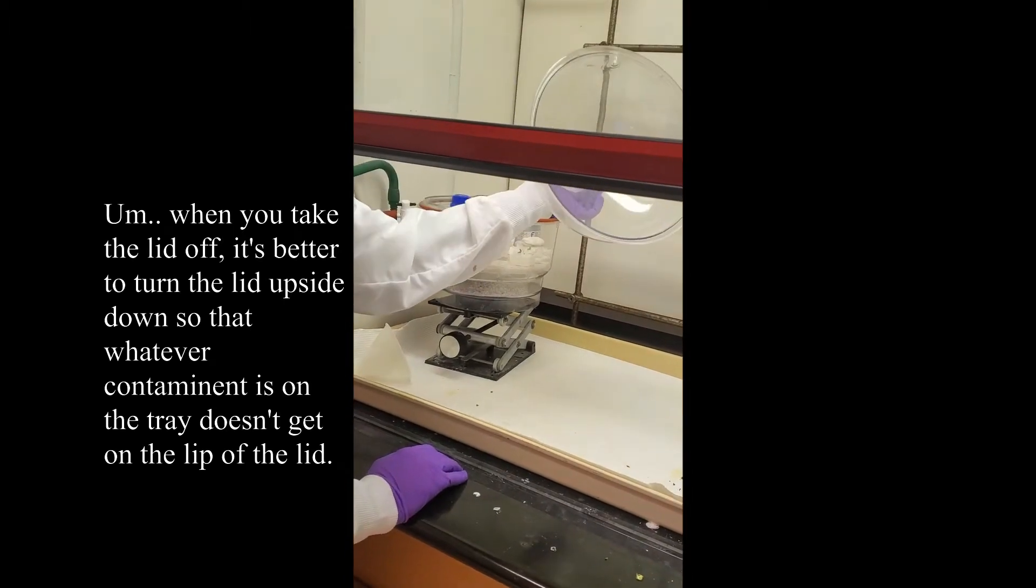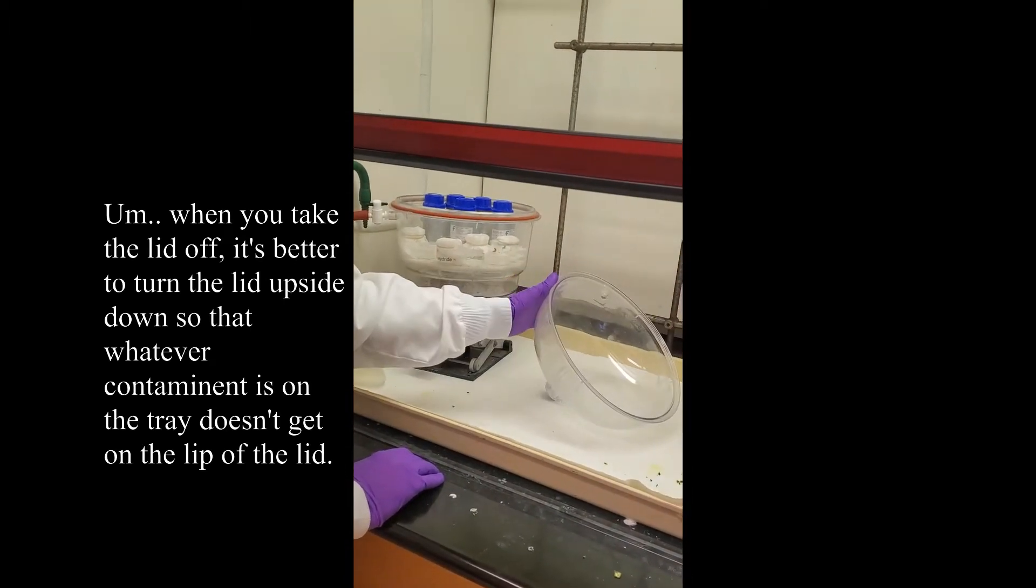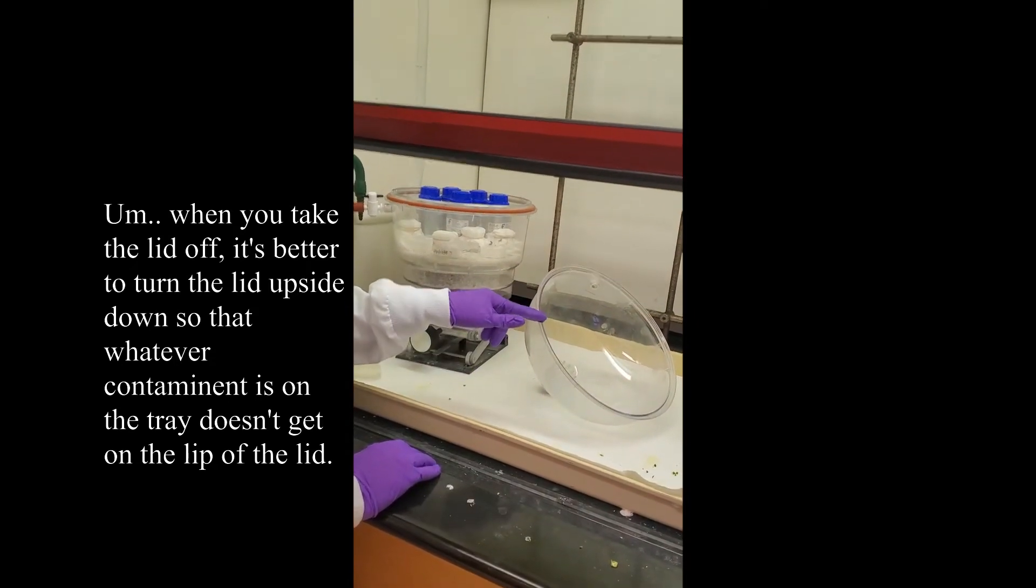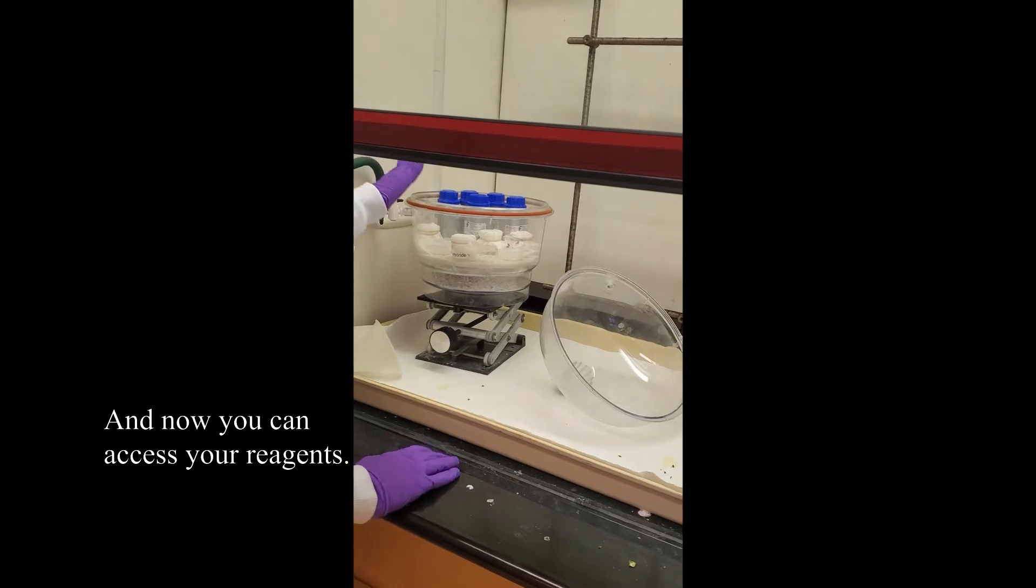When you take the lid off, it's better to turn the lid upside down so that whatever contaminant is on the tray doesn't get on the lip of the lid. And now you can access your reagents.